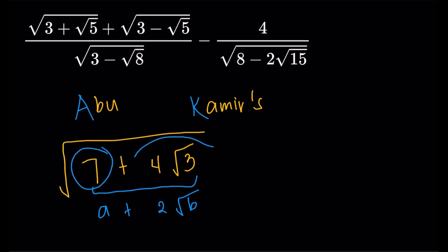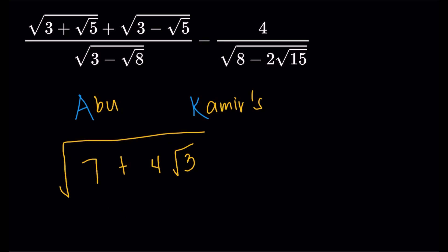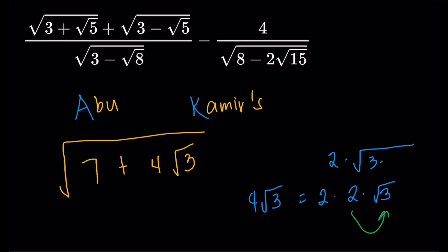The 7 is okay, but the 4 square root of 3 — let's try to make it 2 square root of something. So 4 square root of 3 equals 2 times 2 times square root of 3. I only want one factor of 2 outside the square root, so let's put this 2 inside. That gives us 2 times square root of 3 times 2 squared, which is 2 square root of 12. It's kind of unusual that we're not simplifying things, but this will be a nice technique and the first step for us to use Abu Kamir's method.